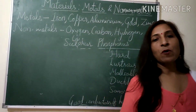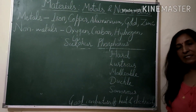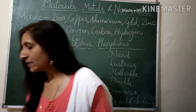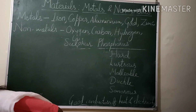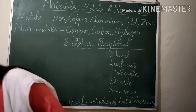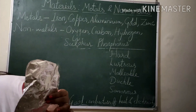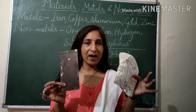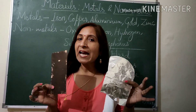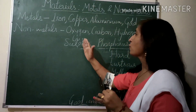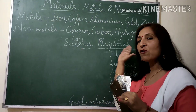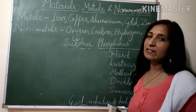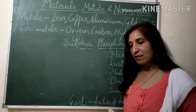The next property is malleability — the property by which metals can be beaten into thin sheets. Here I am showing you aluminium foil and a flat piece of iron. Can we make such flat pieces out of non-metals? No. So non-metals are non-malleable.